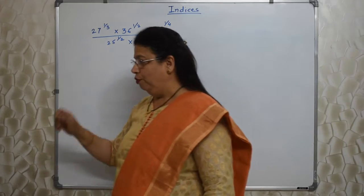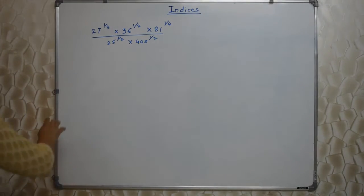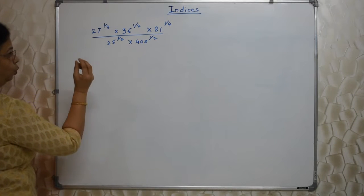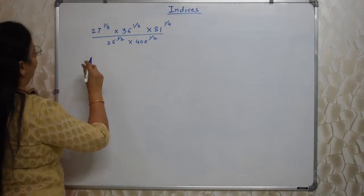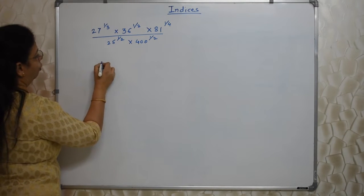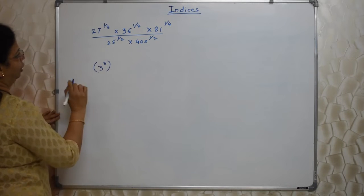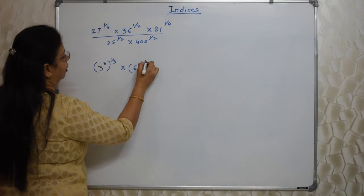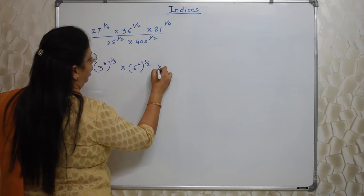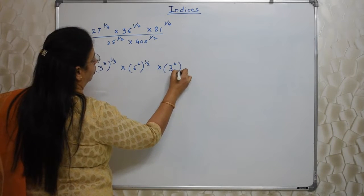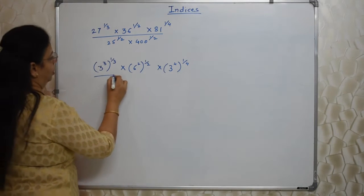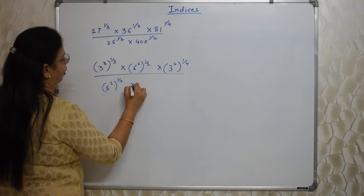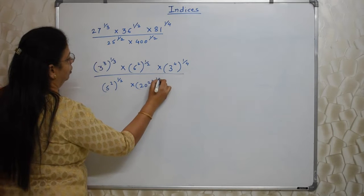First sum I have written on the board. We need to find out the value of this. Whenever we give you something like this, your job is to reduce it to small numbers. What I mean? 27 is cube of 3, so I can write 27 as 3³. And 1/3 is outside. Like that, 36 is 6². 1/2 is outside. So 81 I can write as 3⁴, and 1/4 is outside.